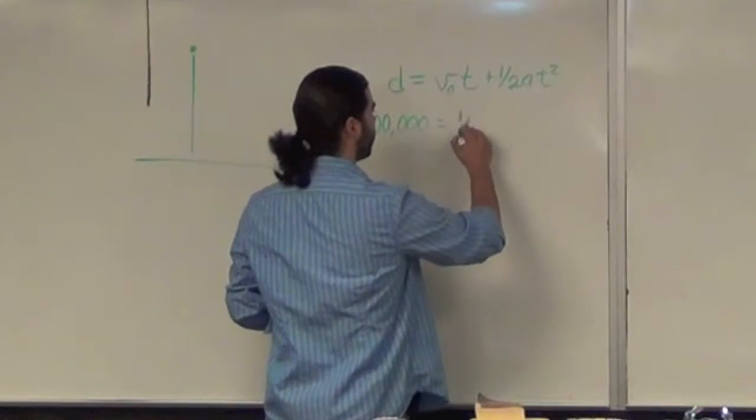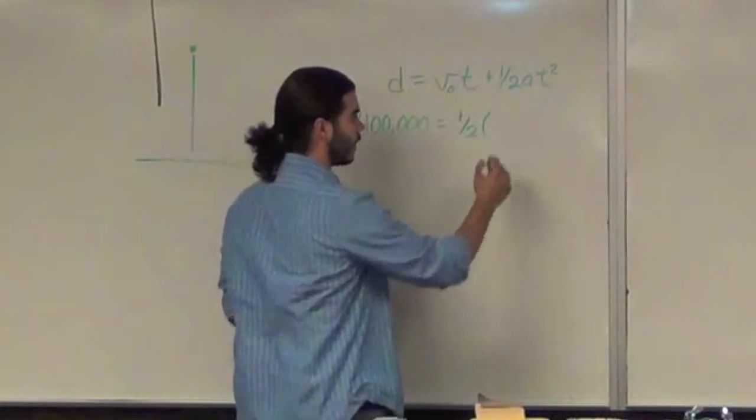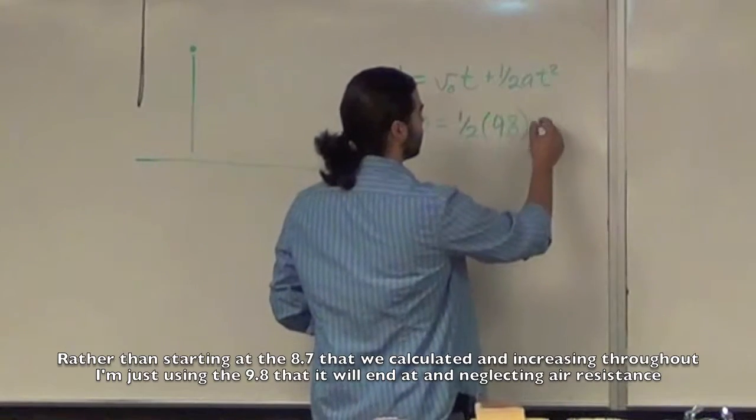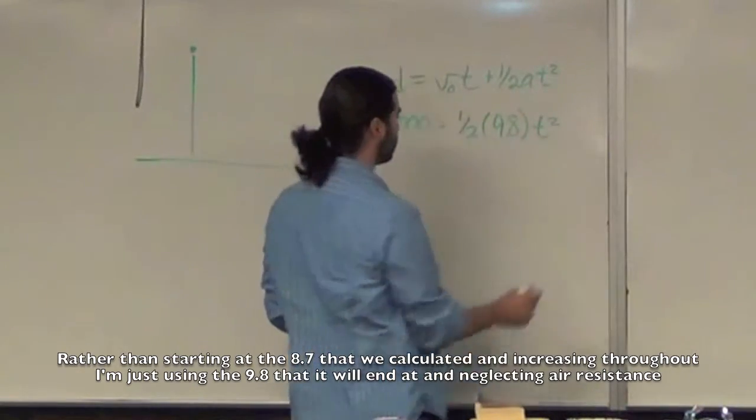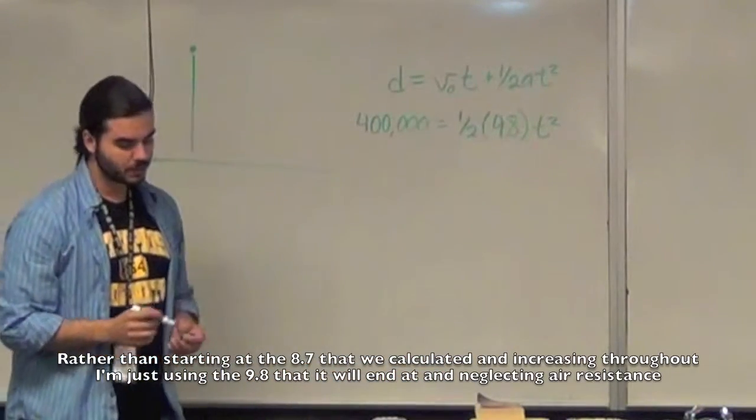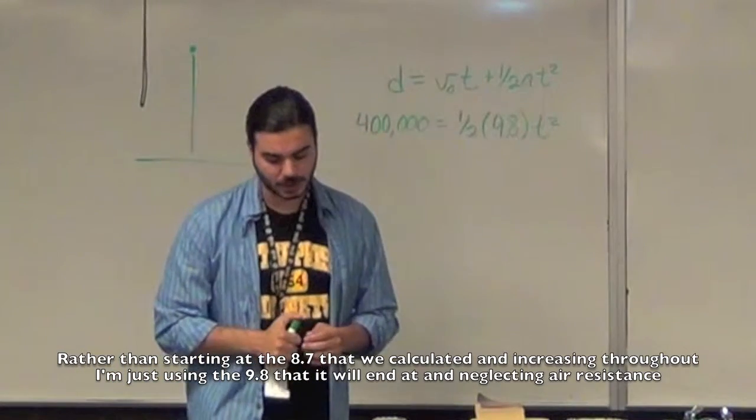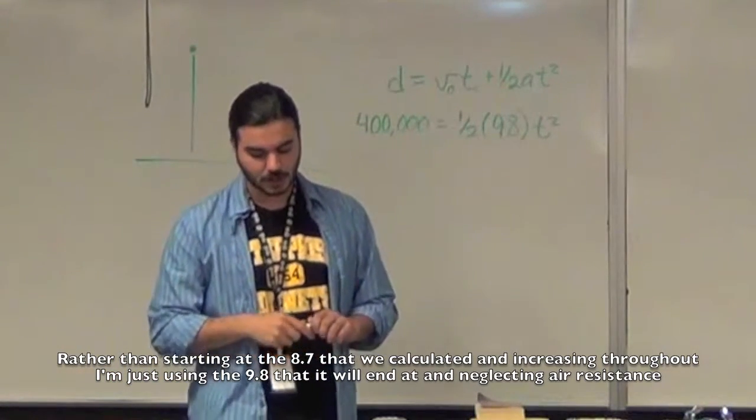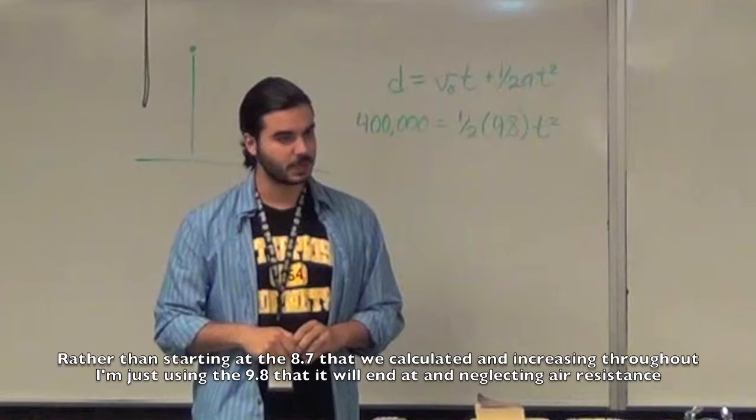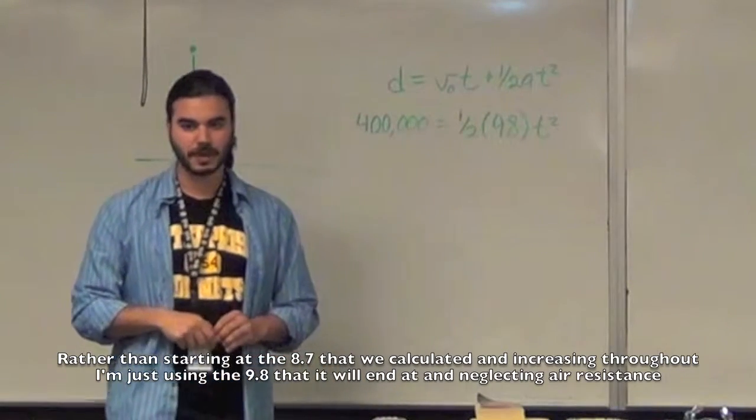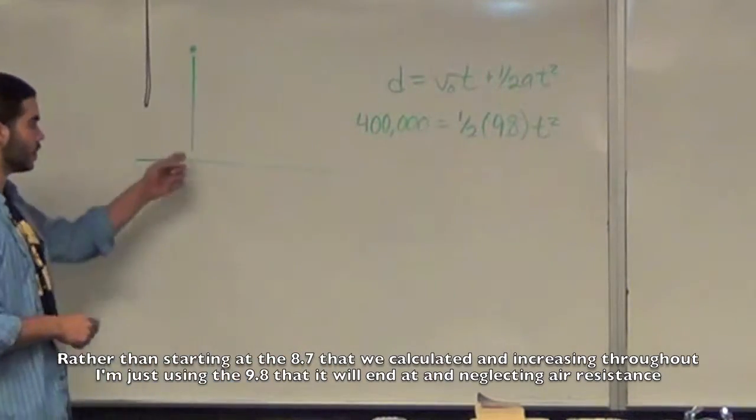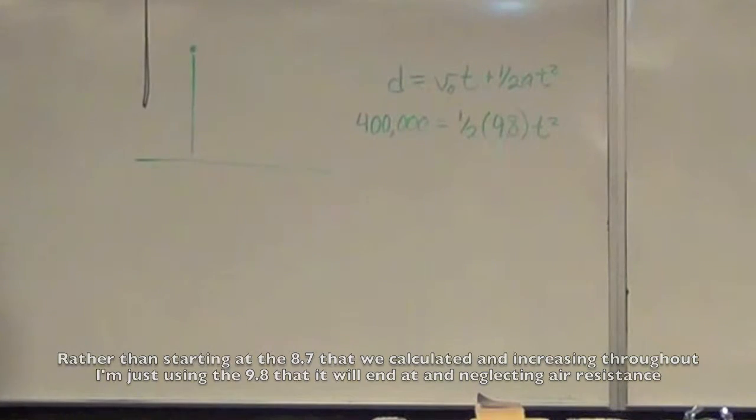Then you're left with one-half acceleration due to gravity, 9.8. Time is what we're looking for. If you solve this equation for time, you end up getting 286 seconds, which is 4.76 minutes. It would take less than five minutes for the space station to crash into the Earth if it really were in freefall.